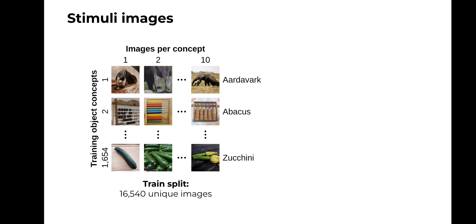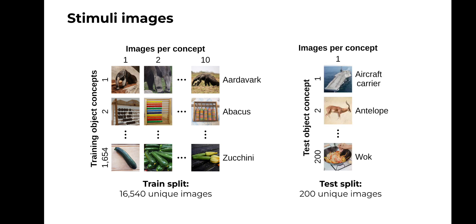The training split consisted of 1,654 object concepts, with 10 different exemplars per concept, for a total of more than 16,000 unique images. The test split consisted of 200 object concepts, with 1 exemplar per concept, for a total of 200 unique images.